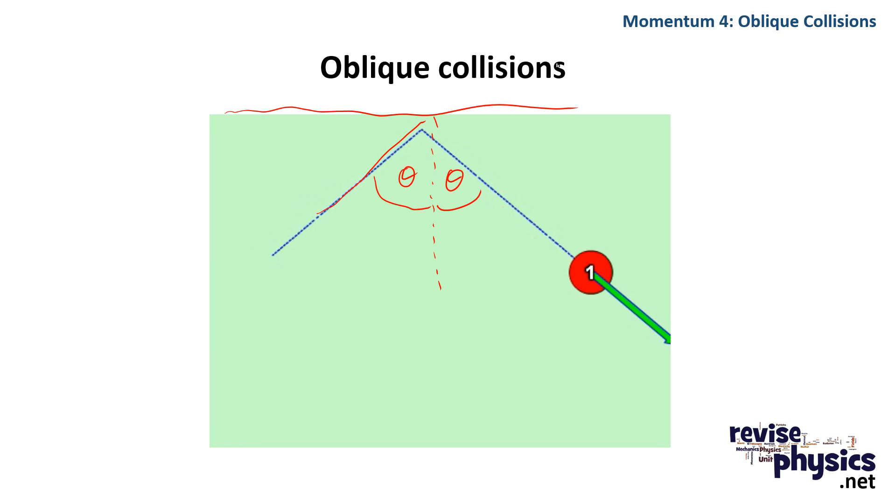Now the kind of questions you might get asked on this will usually consider the motion in the plane towards the wall or rather along the normal. And so if we consider our components, the component of the velocity in that direction is going to be its overall velocity times cos theta.